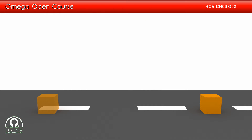Let us first draw the free body diagram of the block. Gravitational force mg will pull the block in the downward direction. The normal reaction from the road N will push the block upward. Kinetic friction of mu times normal reaction will act in the direction opposite to the direction of motion.